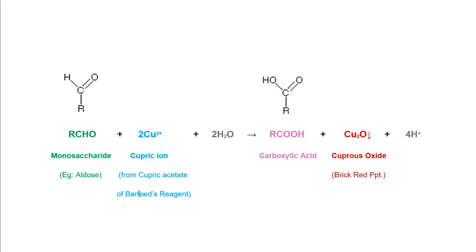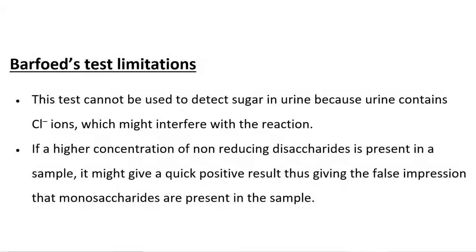When a reducing monosaccharide or disaccharide is mixed with Barfoed's reagent, the cupric acetate in the reagent is reduced into cuprous oxide, which gives a brick red precipitate. The reaction that takes place in a positive Barfoed's test is as seen here.